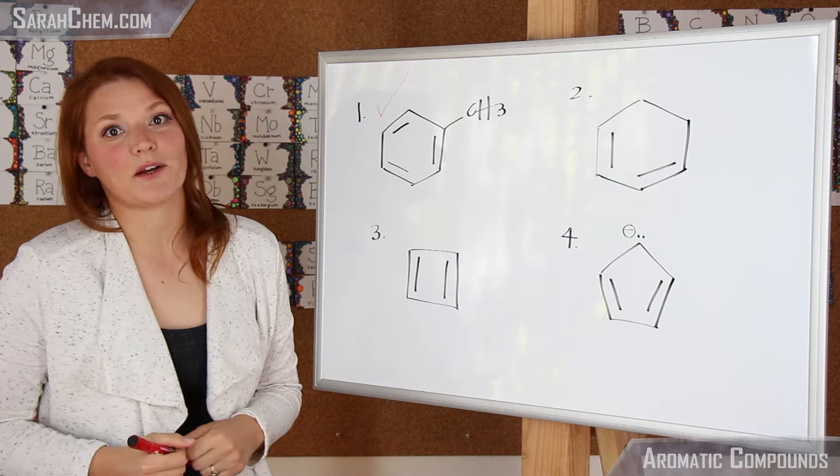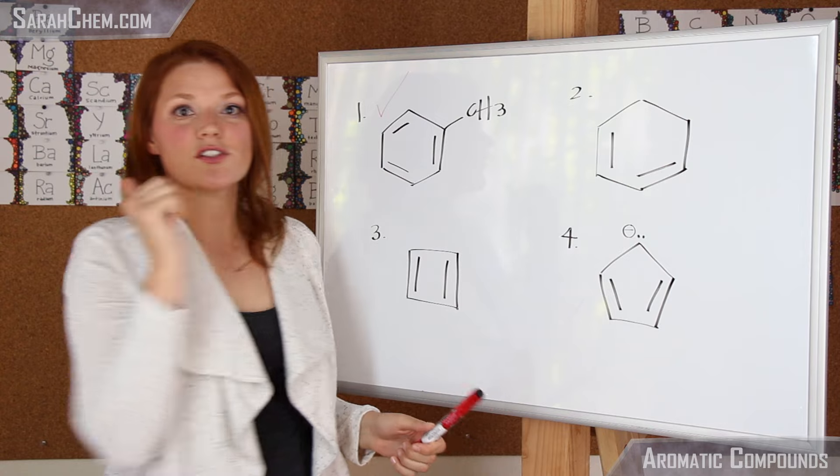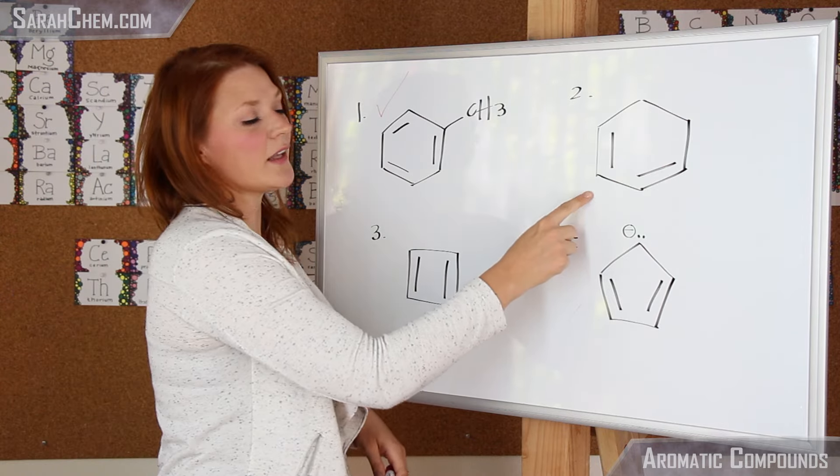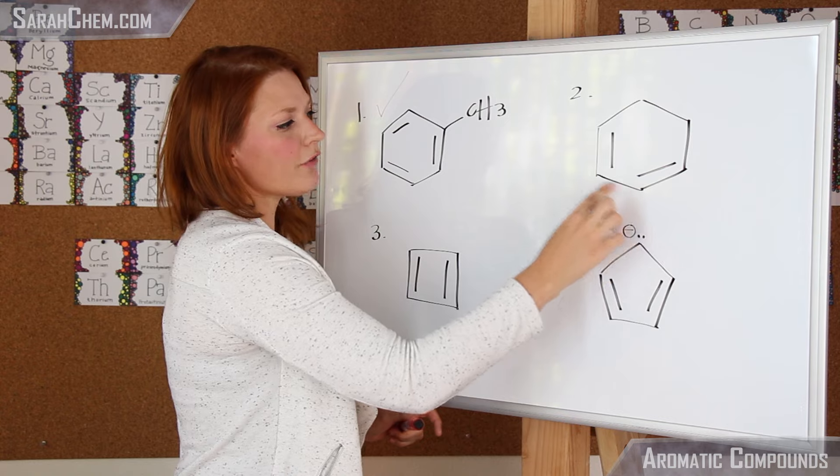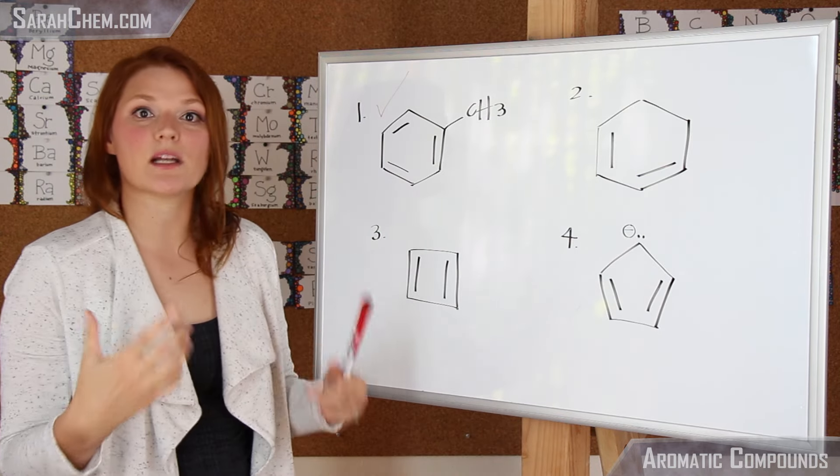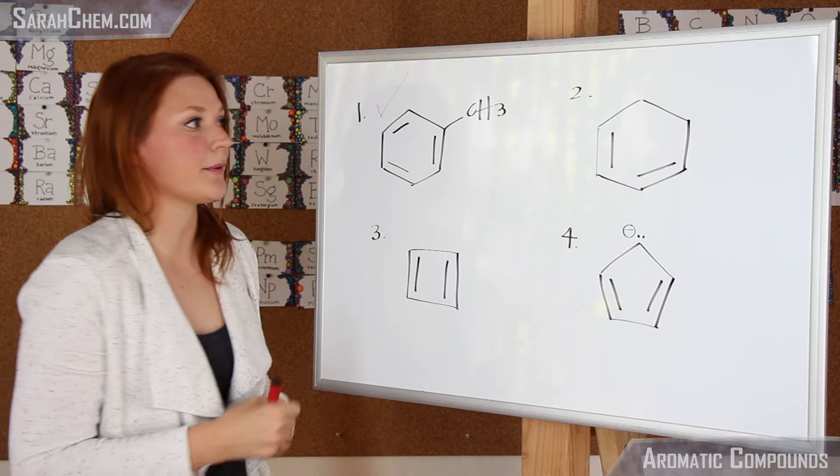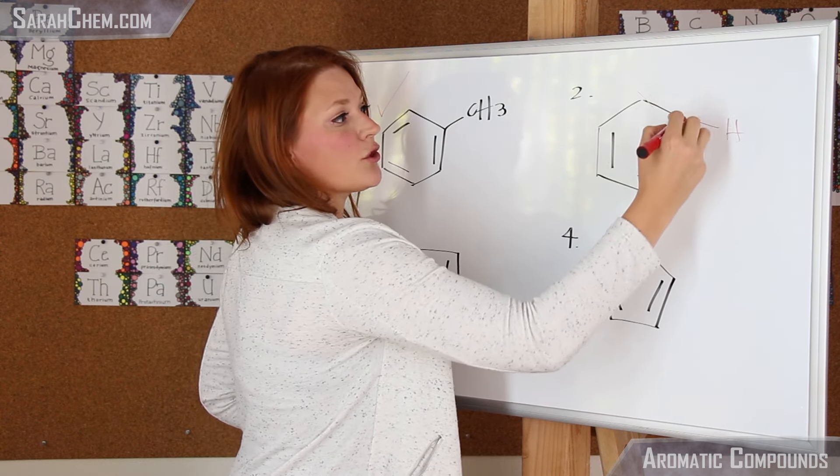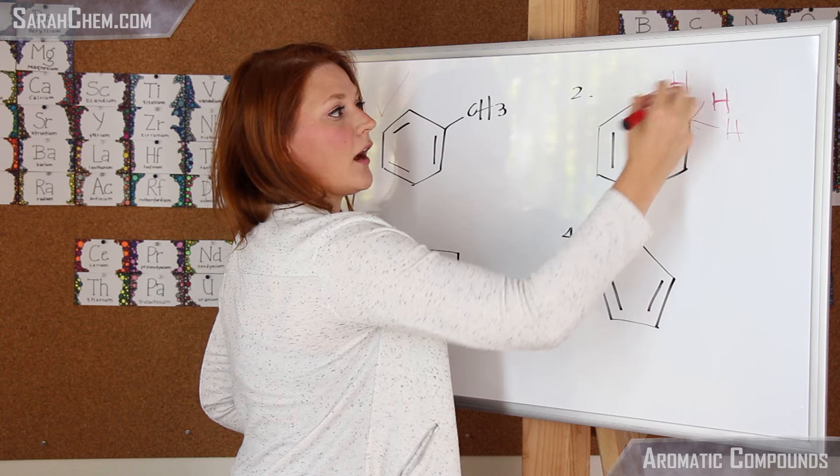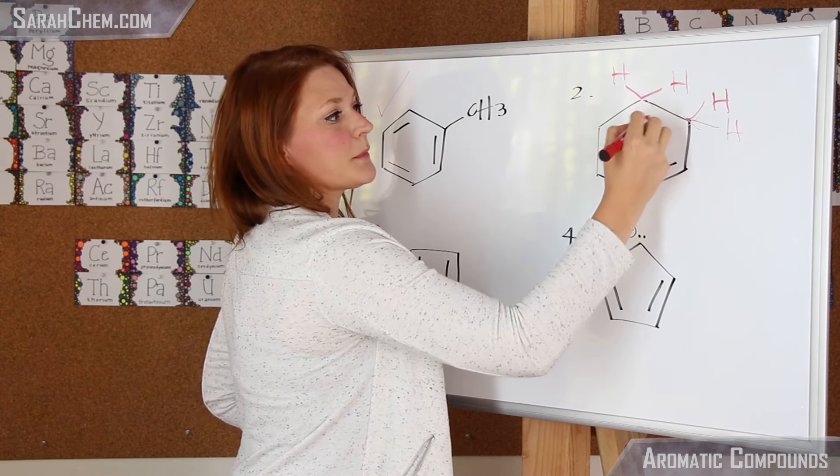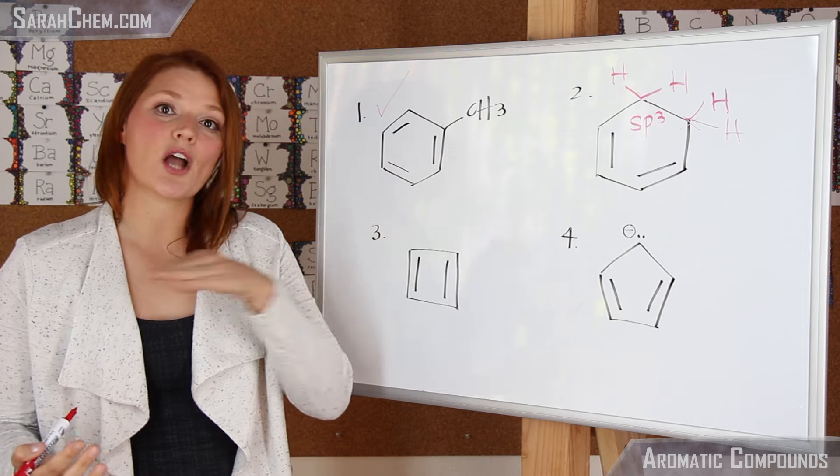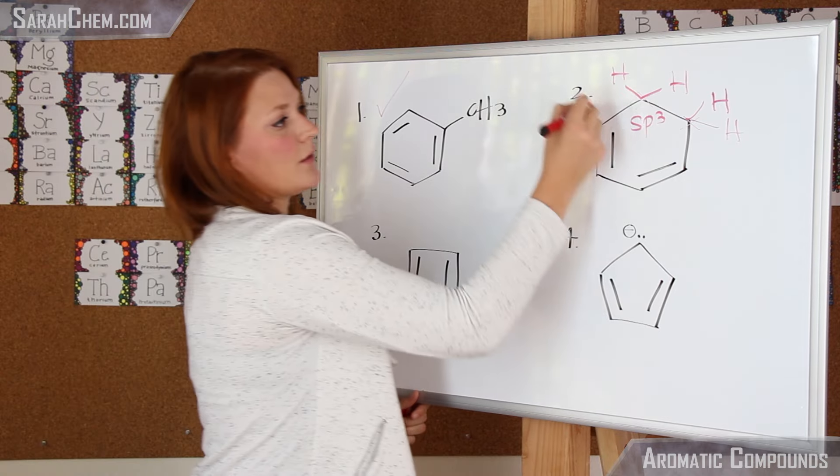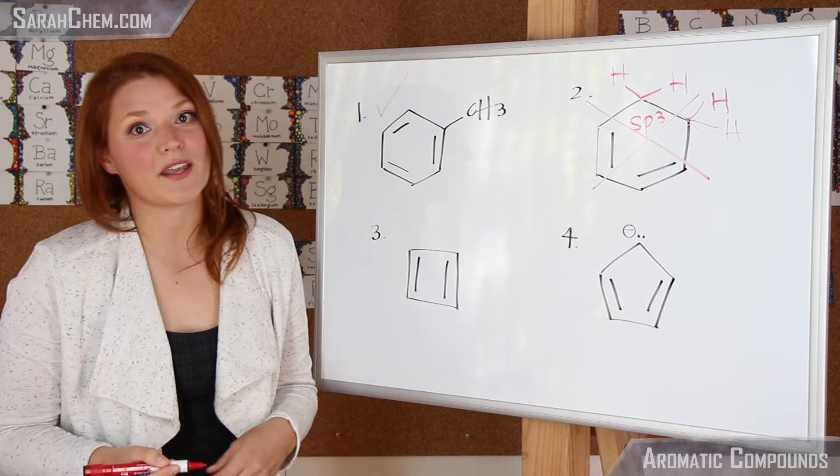Let's take a look at the second one. It's got the cycle, so good on the first criteria. The second one has to be planar. We can see that all of the carbons that are participating in those double bonds would be sp2 hybridized. These ones here though would not. They both have two hydrogens implied coming off of them, so they would be sp3 hybridized, and because of that, this would not be a planar cyclic compound. So this one here would not be aromatic.